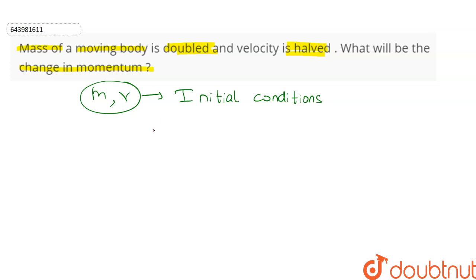So the momentum, which is denoted as p, is defined as the product of mass of the body and its velocity. Therefore, p is equal to mv. Here, p is the initial momentum.